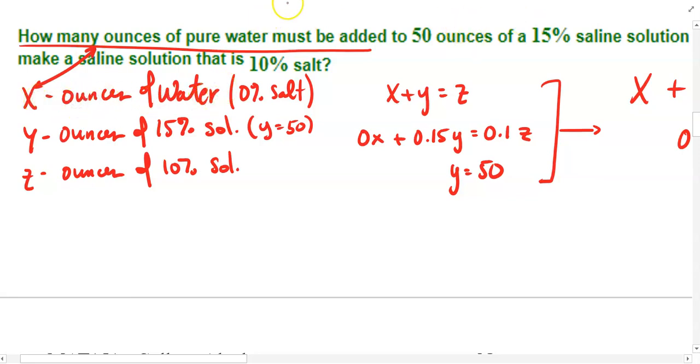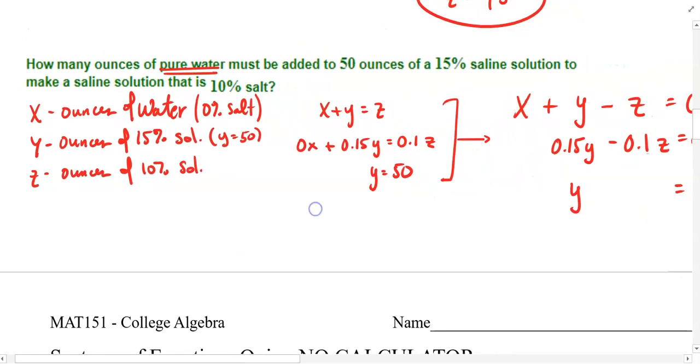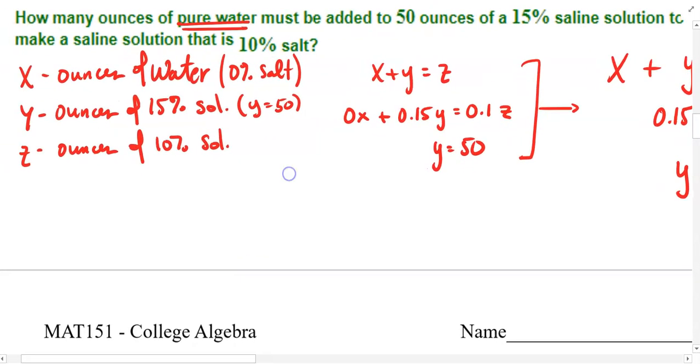As I kept reading, I noticed that this was talking about water that was mixed with salt. If it's pure water, that implies that it's 0% salt, contains 0% salt. The y variable ended up being the number of ounces of 15% salt solution or saline solution. And we also were told that that's 50 ounces. And then finally, z is the number of ounces of 10% solution.